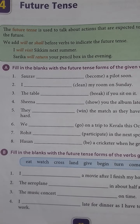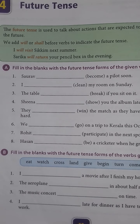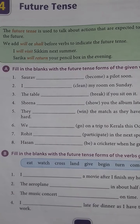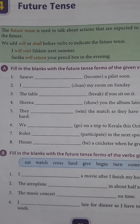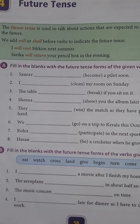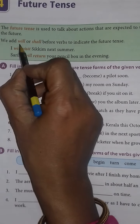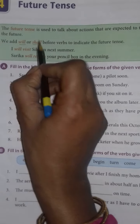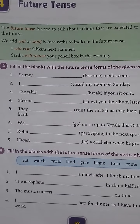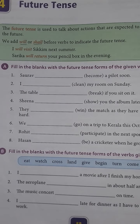Like you say, I will eat, I will play — which are going to be in the future. So you will use the future tense, children. We use will or shall before verbs to indicate the future tense.